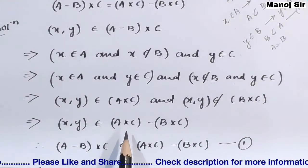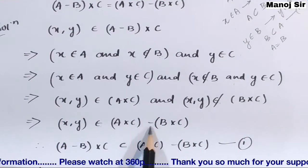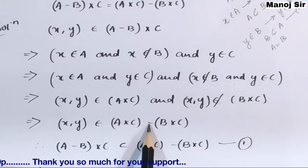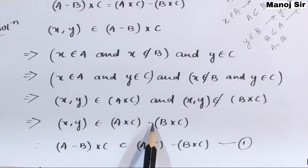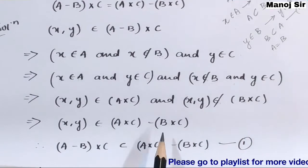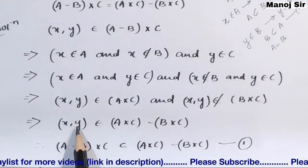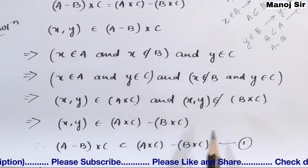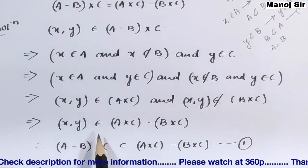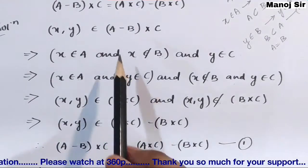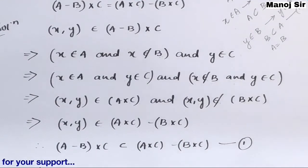Since (x, y) belongs to A × C and (x, y) does not belong to B × C, we use the minus sign to write: (x, y) belongs to A × C minus B × C. We started with (x, y) belonging to (A - B) × C and proved (x, y) belongs to A × C - B × C. Therefore (A - B) × C is a subset of A × C - B × C. Let this be equation number 1.